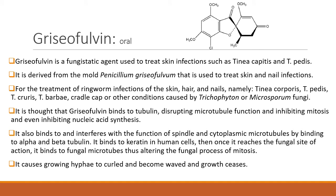Now about griseofulvin. It is widely available as oral suspension and tablets. Griseofulvin is a fungistatic agent, meaning it stops the growth of fungi. It is used to treat skin infections caused by Tinea capitis and Tinea pedis. It is derived from the mold Penicillium griseofulvum and is used to treat skin and nail infections — including ringworm infections of the skin, hair, and nails: Tinea corporis, Tinea pedis, Tinea cruris, Tinea barbae, and conditions caused by Trichophyton or Microsporum fungi.